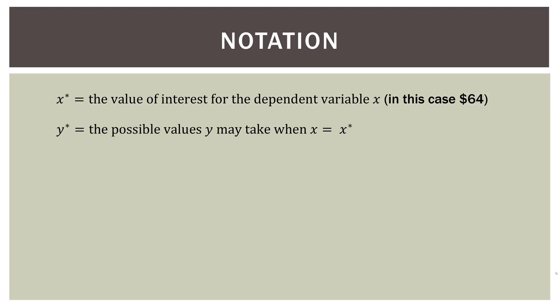So I mentioned notation, so you have to get this out of the way. So you're going to see x star. x star is the value of interest for the dependent variable x. In this case, it's $64. That's all it means. That's the value we're looking at. You'll see y star. So y star is just the possible values that y may take when x is x star. So y is the possible values of y, in this case, when x is $64.